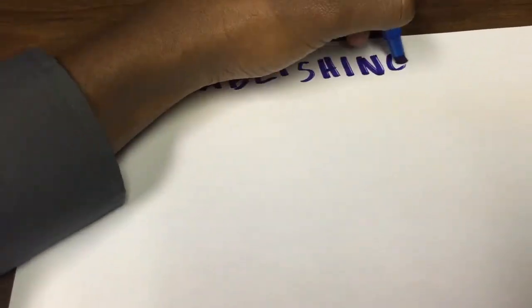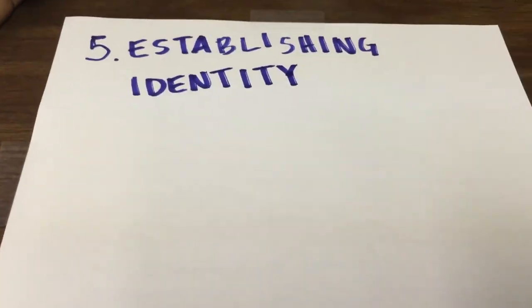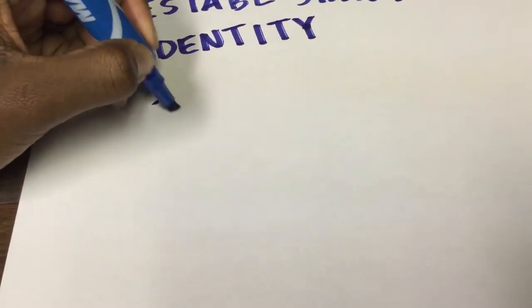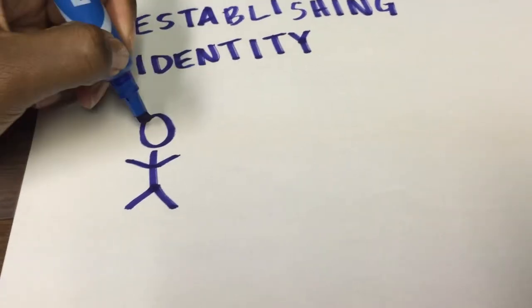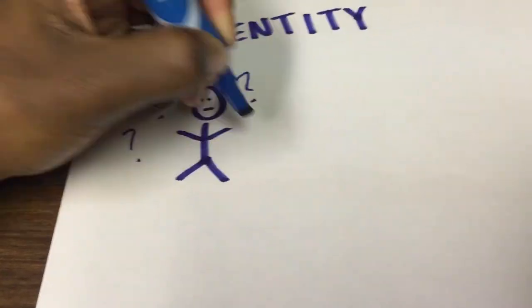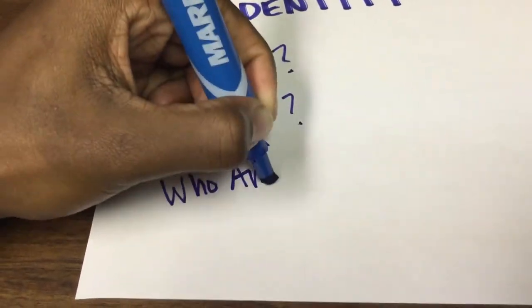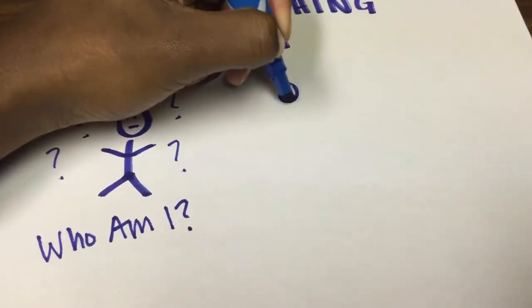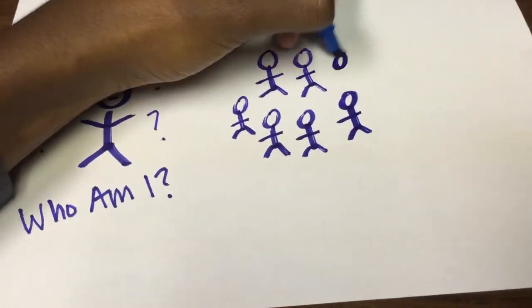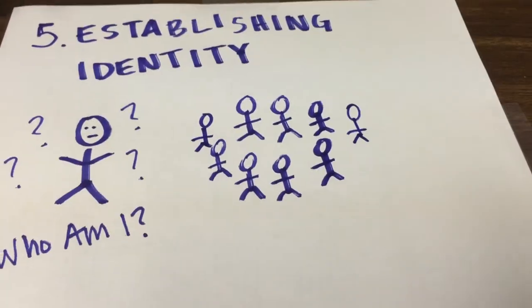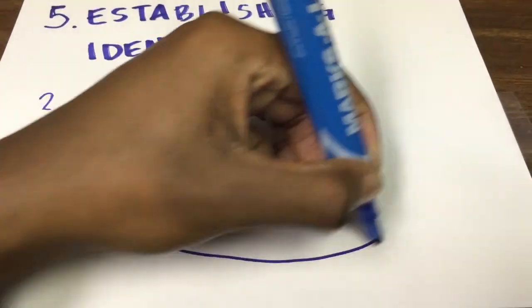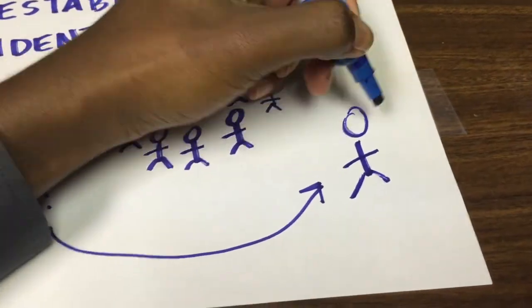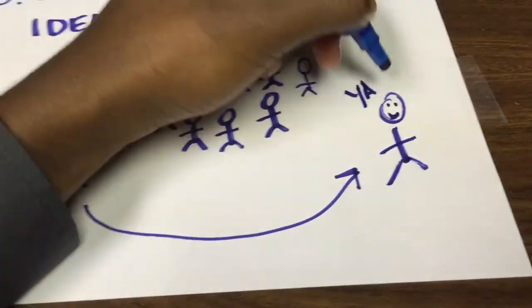The fifth vector is establishing identity. Say that we have Matthew who is in a fraternity, and as he enters the fraternity, he's not really sure of who he is. With him being in a fraternity with many other individuals in the same boat, over time he'll be able to establish that identity, figure out who he is, and accept his identity in society.